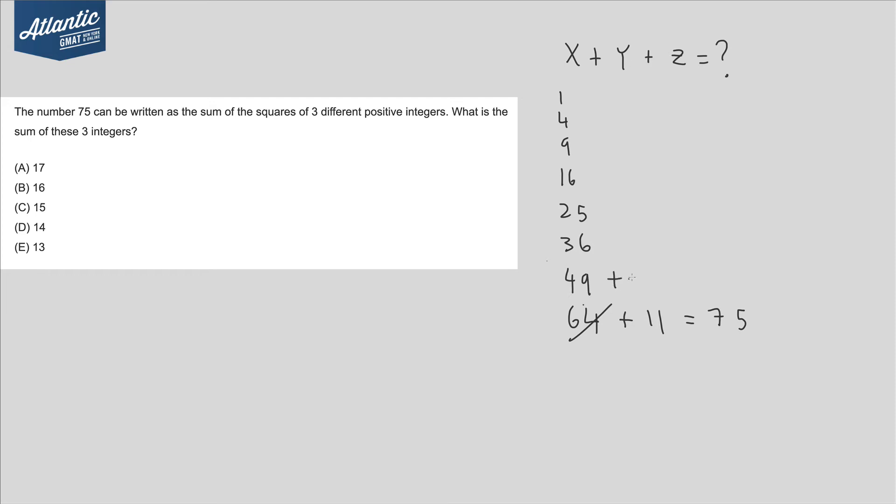We're gonna do the same thing with 49. 49 plus what equals 75? And that's 26. Again, we want to find the sum of two of these numbers that equals 26. So you just scan the list, and 25 and 1. So our numbers are 49, 25, and 1, and you need to take the roots of those. So 7, 5, and 1 is 13, and we're looking at E.